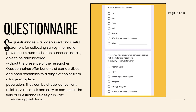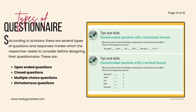Next on the list of the most common data collection tools are questionnaires. Unlike interviews, questionnaires can be administered and filled without the presence of the researcher. They are mostly used with large samples or large populations. Questionnaires are cheap, convenient, and easy to complete, and can be administered online. According to scholars, there are several types of questions researchers need to consider before designing their questionnaires, and as you can see in the image, the format too can be different.